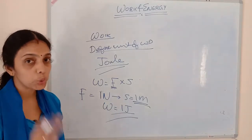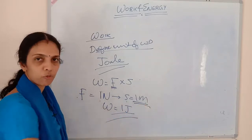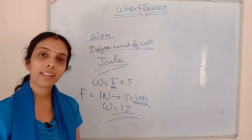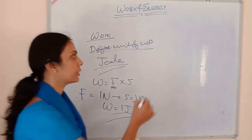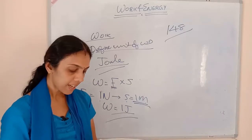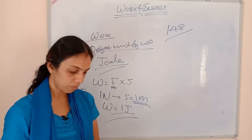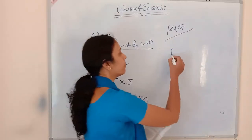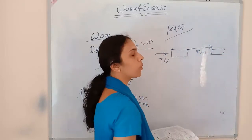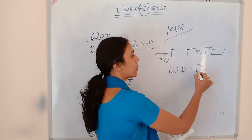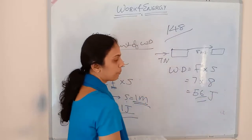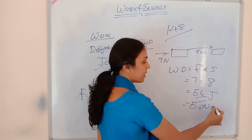Now let's do some numericals from the textbook, page number 148. First: a force of 7 Newton acts on an object, and the displacement is 8 meter in the direction of force. What is the work done? Work done equals force into displacement: 7 Newton into 8 meter equals 56 Joule, or 56 Newton meter.